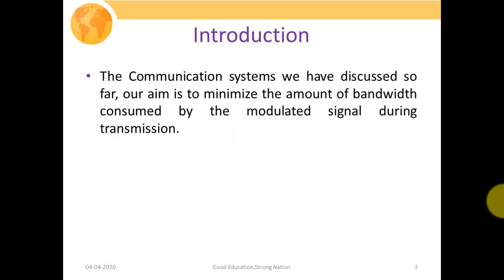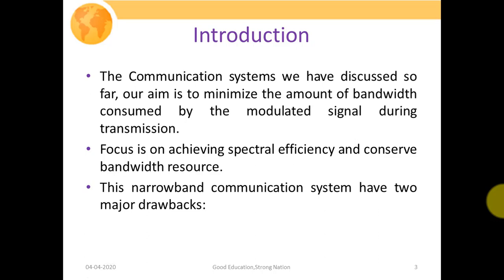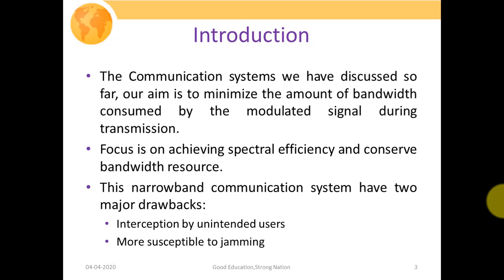In the communication systems we have discussed so far, our aim is to minimize the amount of bandwidth consumed by the modulated signal during transmission. We have discussed narrowband communication systems where the emphasis is to minimize the bandwidth required to transmit any signal. The focus is on achieving high spectral efficiency to conserve bandwidth, since it is a very scarce resource. However, this narrowband communication system has two major drawbacks: interception by unintended users, and susceptibility to jamming.